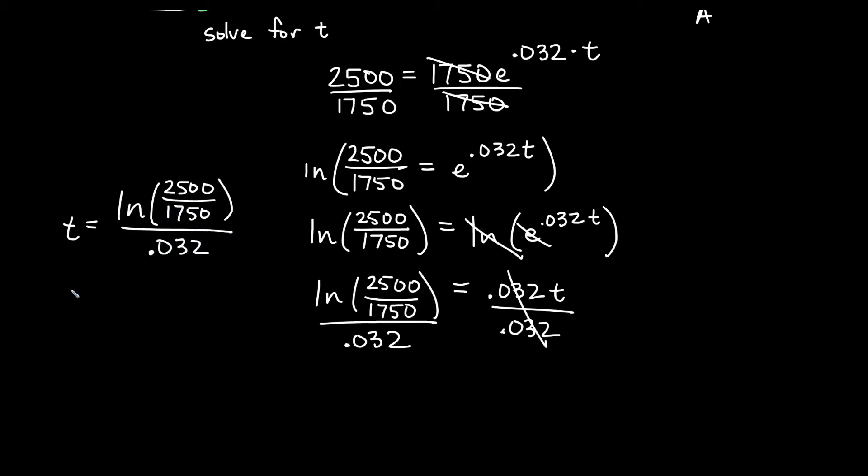If we wanted a decimal approximation for this, let's say to a couple of decimal places, then we could just type this into the calculator. We have an ln button. It's no problem. We'll get that t is about equal to 11.15 years for this to occur if we round to two places.